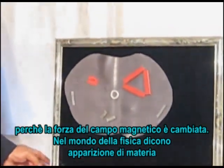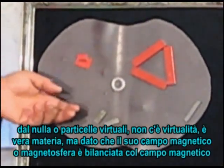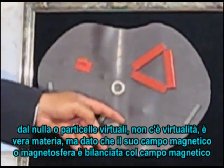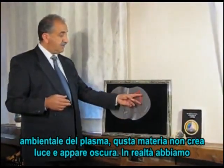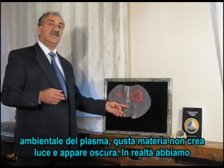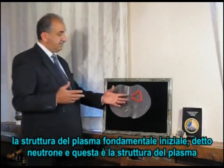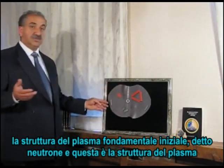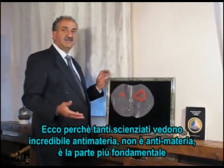In the world of physics, the appearance of matter out of nothing is called virtual particles. There is no virtuality — it's actually matter, but because its magnetic field or magnetosphere is in balance in magnetic field strength with the environment of the plasma, the matter does not create any light. That's why it appears as dark. In reality, this is the structure of what we call the initial fundamental plasma — it's called the neutron — and that's what the structure of the plasma is.